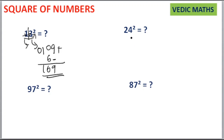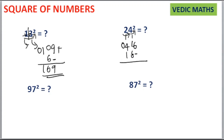The same way for 24: 4 squared is equal to 16 and 2 squared is equal to 4. Then 2 into 4 is equal to 8, and 8 into 2 is equal to 16. So we will write here — leave the unit place, then write 16 here. Adding the terms gives you 576, which is your answer.